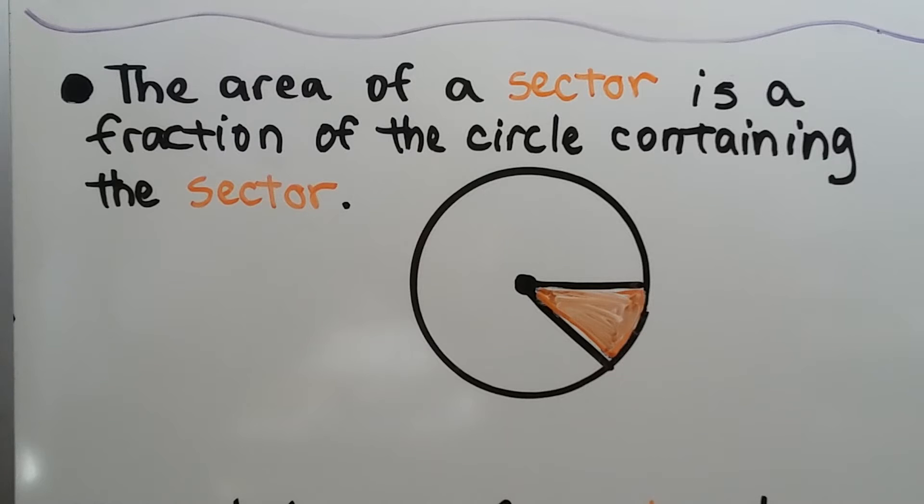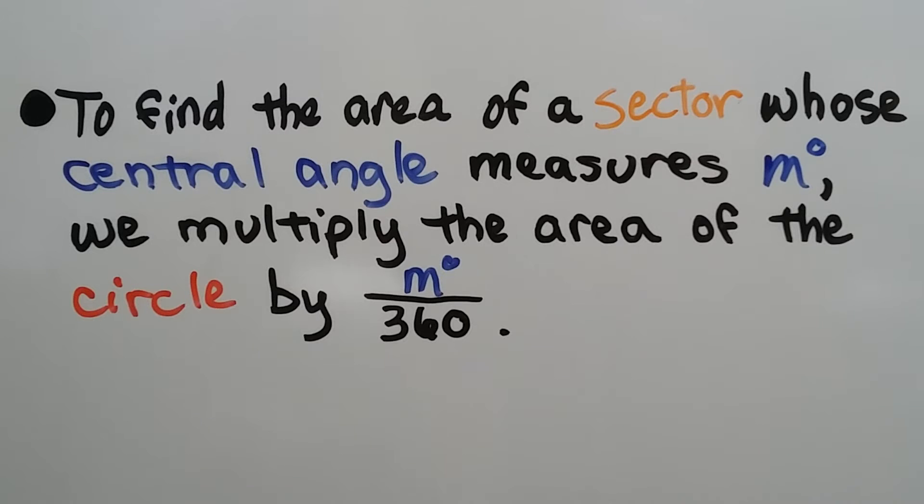The area of a sector is a fraction of the circle containing the sector, so that orange area is a sector of that circle. To find the area of a sector whose central angle measures m degrees, we multiply the area of the circle by the quotient of the measure of that central angle and 360 degrees.